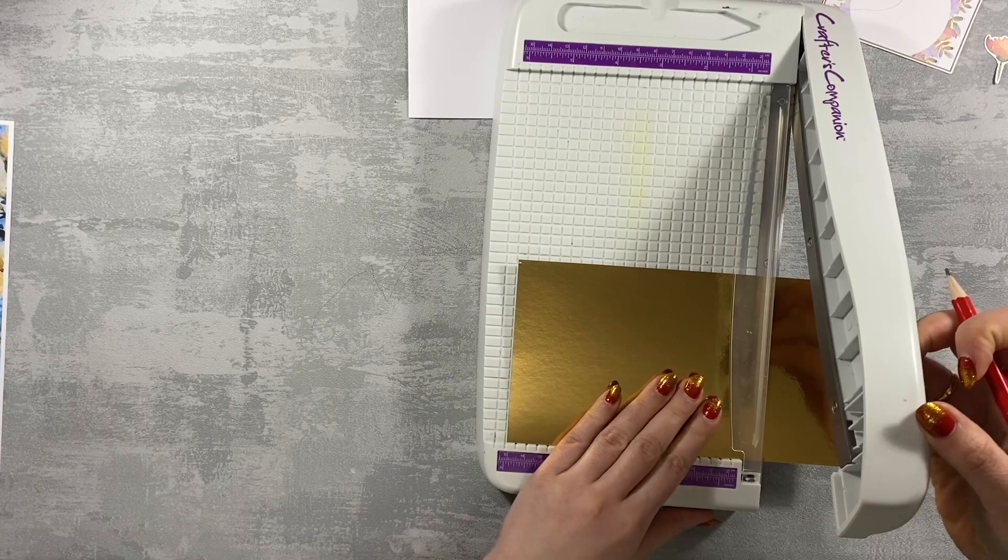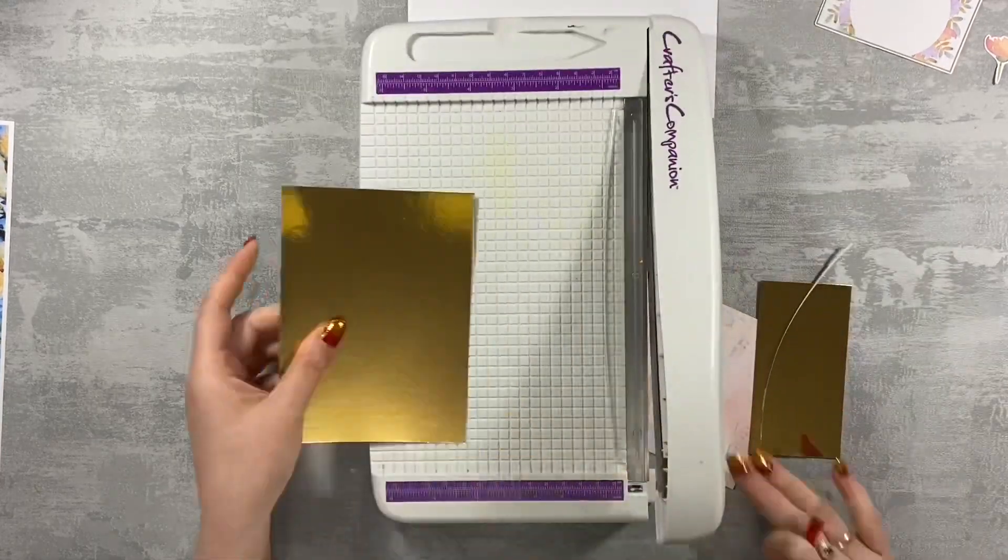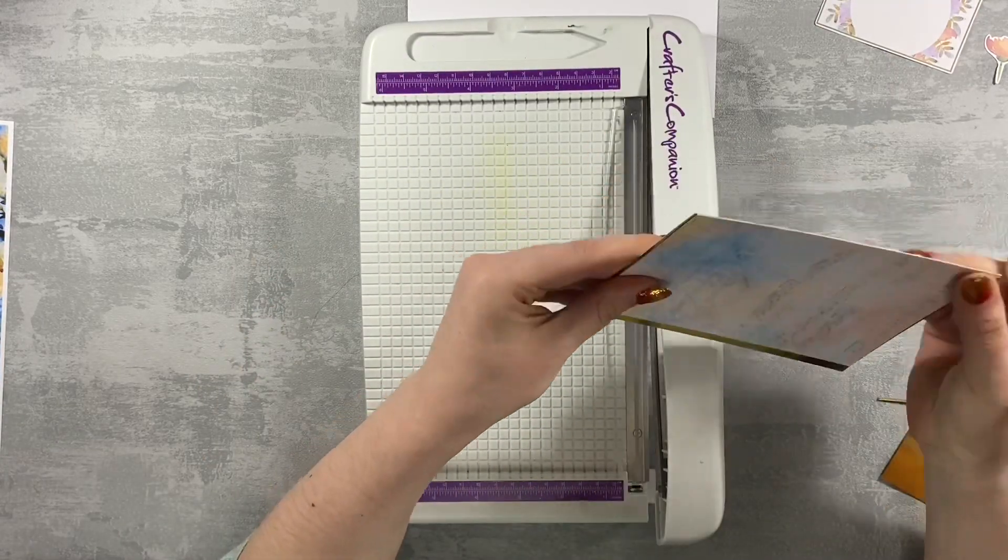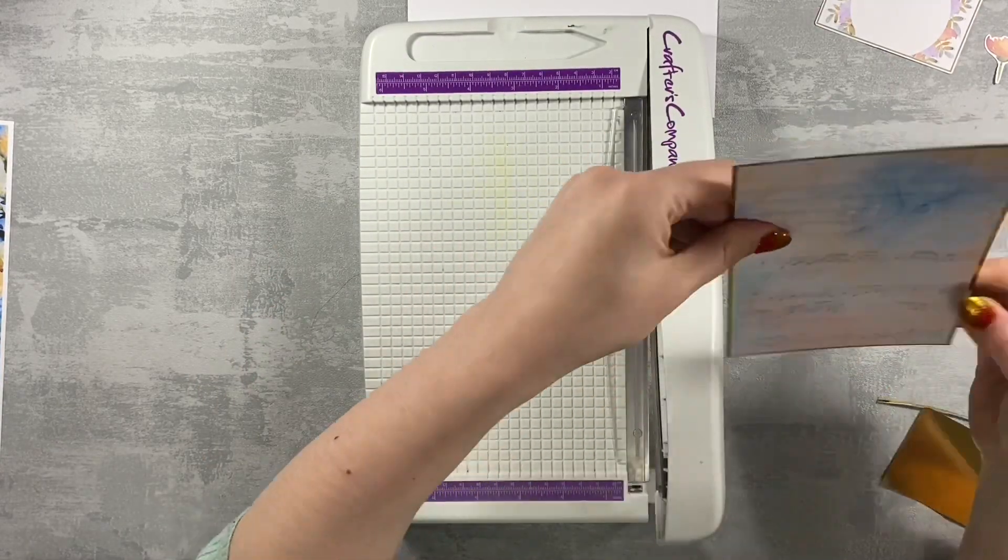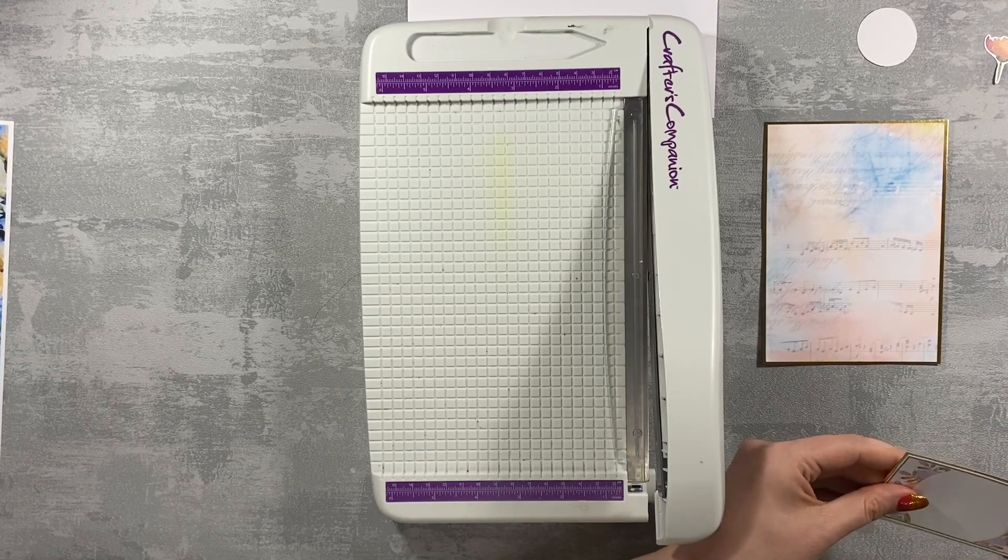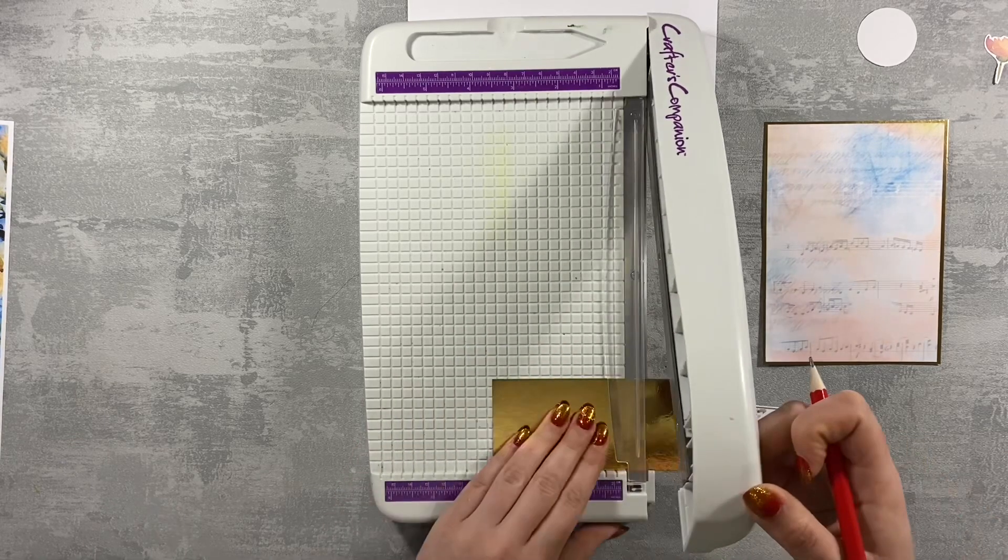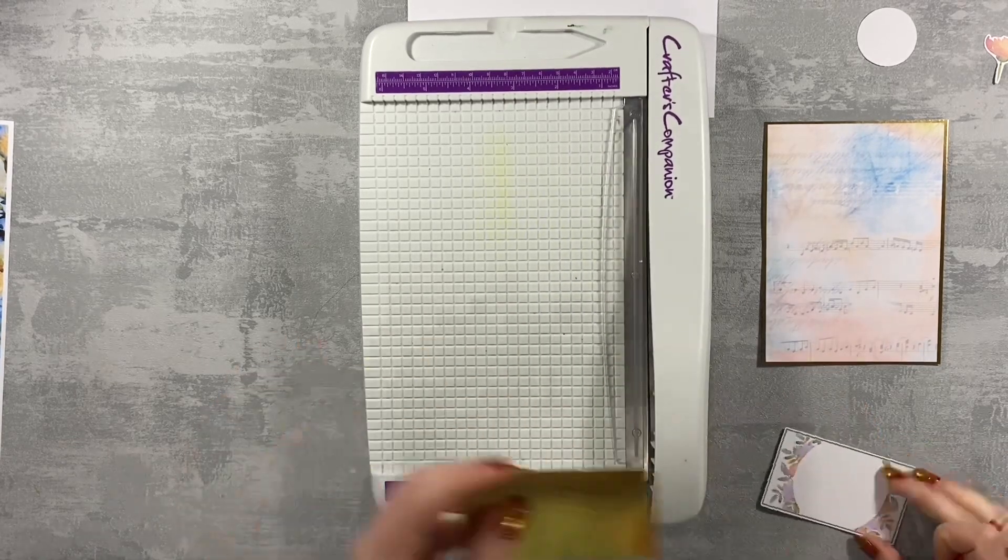Now this piece of design paper I'm using is actually the backing packaging of the flower set which is in the box. I had this piece of gold paper, a gold mirror cardstock which I had leftover from another work, and I thought why not use them up. This way I will have this little teeny tiny bit of sparkle behind my panels.